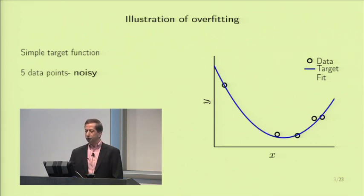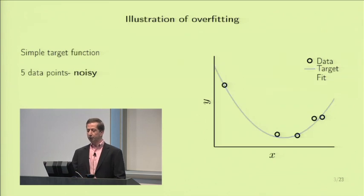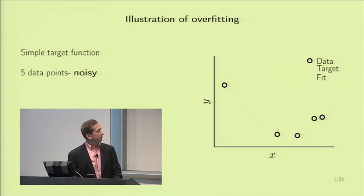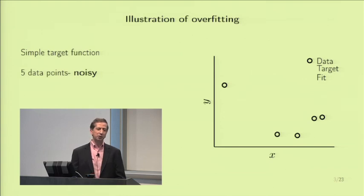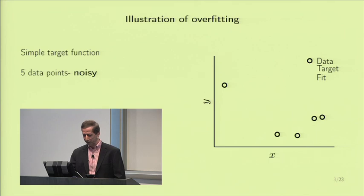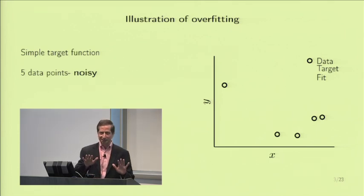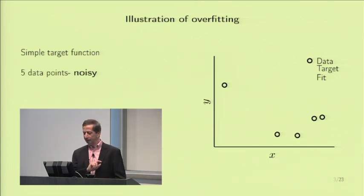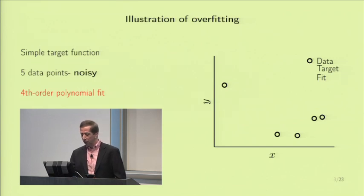If I just give you five points—which is what you face when you learn—the target disappears. You want to fit five points. Going back to your math, you realize a fourth-order polynomial will do it since you have five parameters. This is the approach of someone who doesn't know machine learning—using a fourth-order polynomial to fit five points.